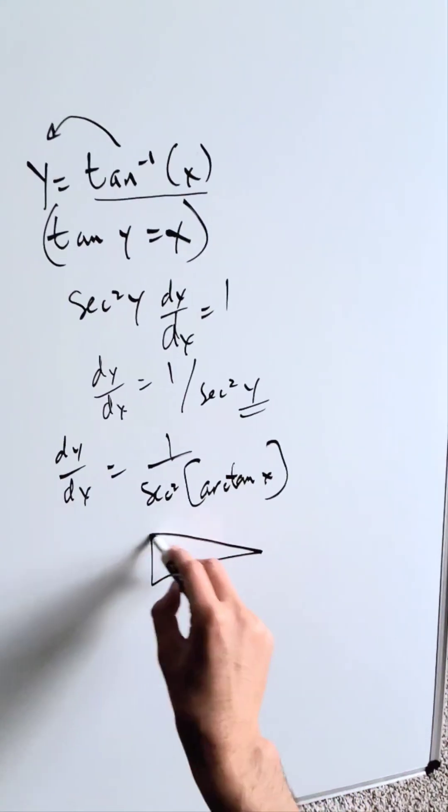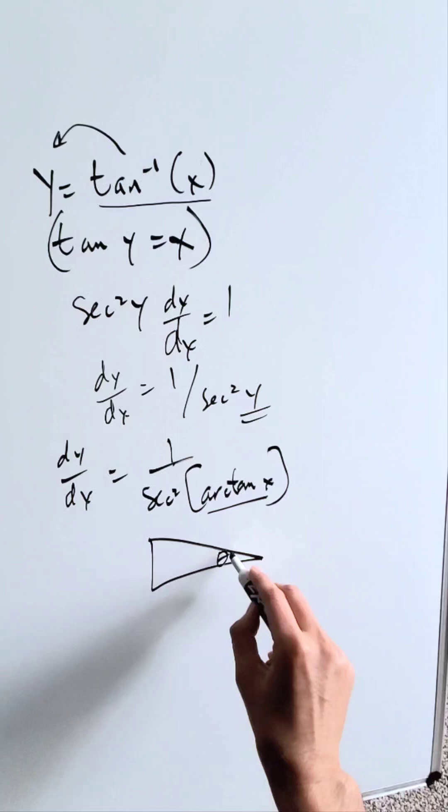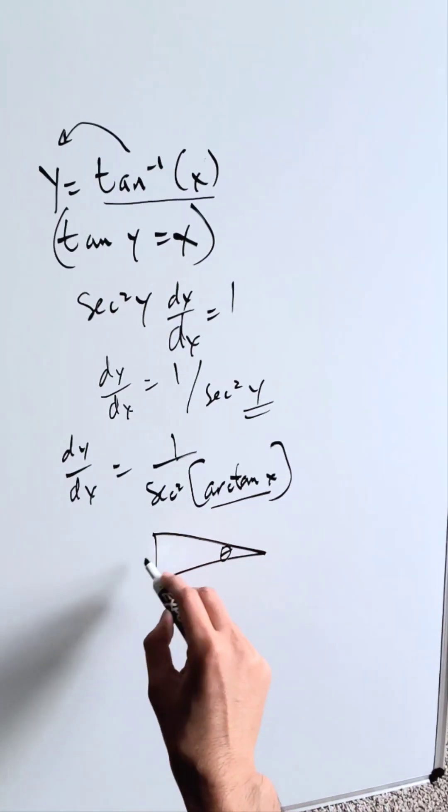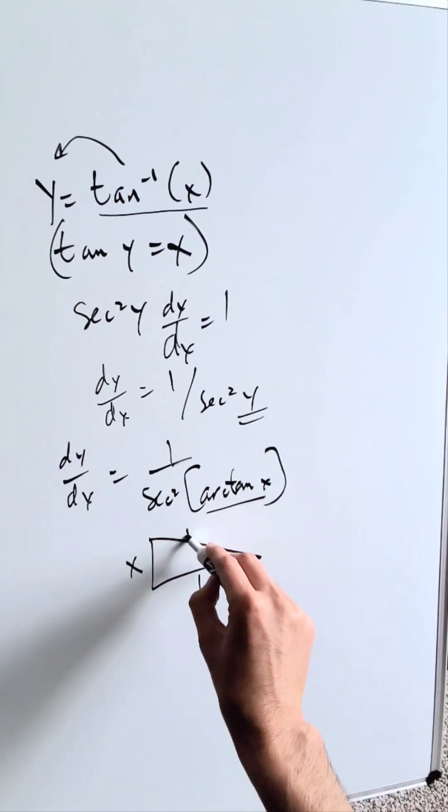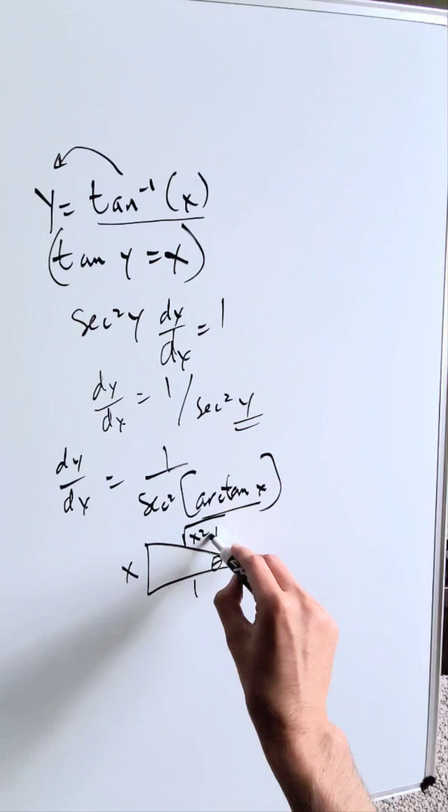Think about a right triangle which fits the definition of what you see over here. A certain angle theta with respect to arctan, and tan is equal to x over 1. This right here will be square root of x squared plus 1.